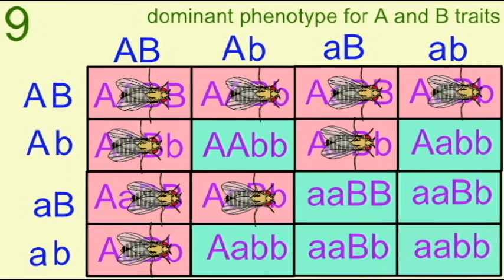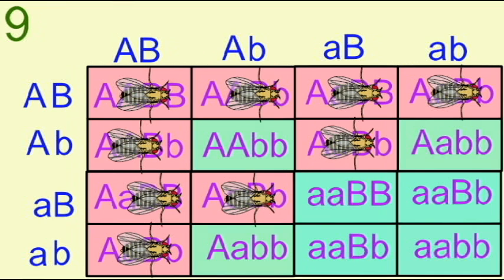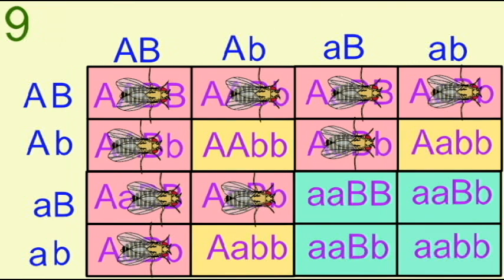the F2 flies have this 9 to 3 to 3 to 1 ratio, where 9/16ths are wild type for both conditions. They have a tan body color and brick red eyes.